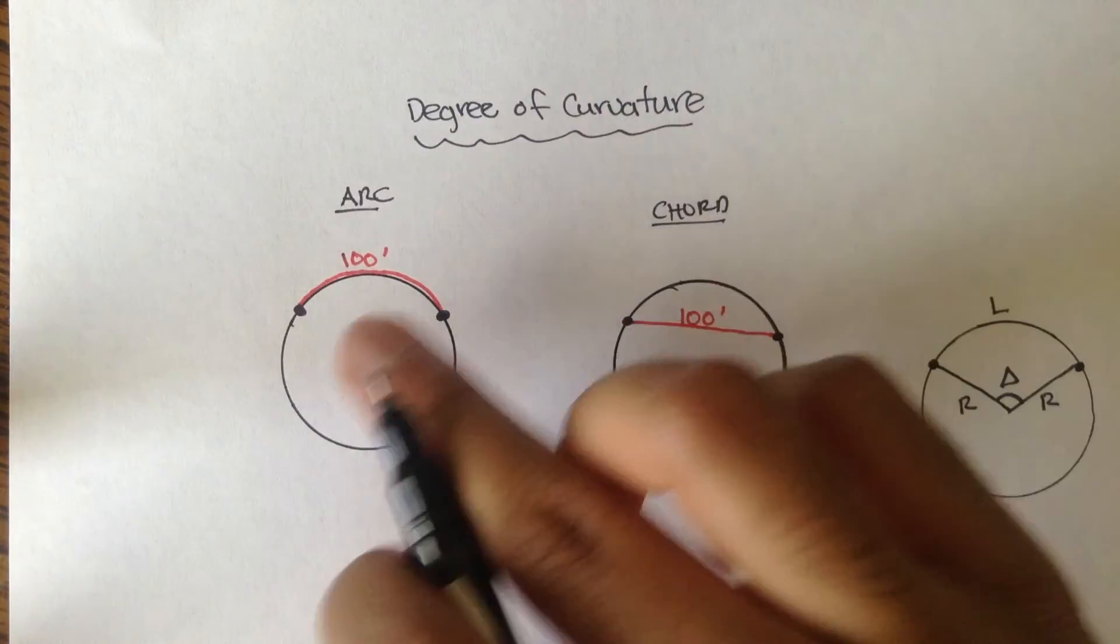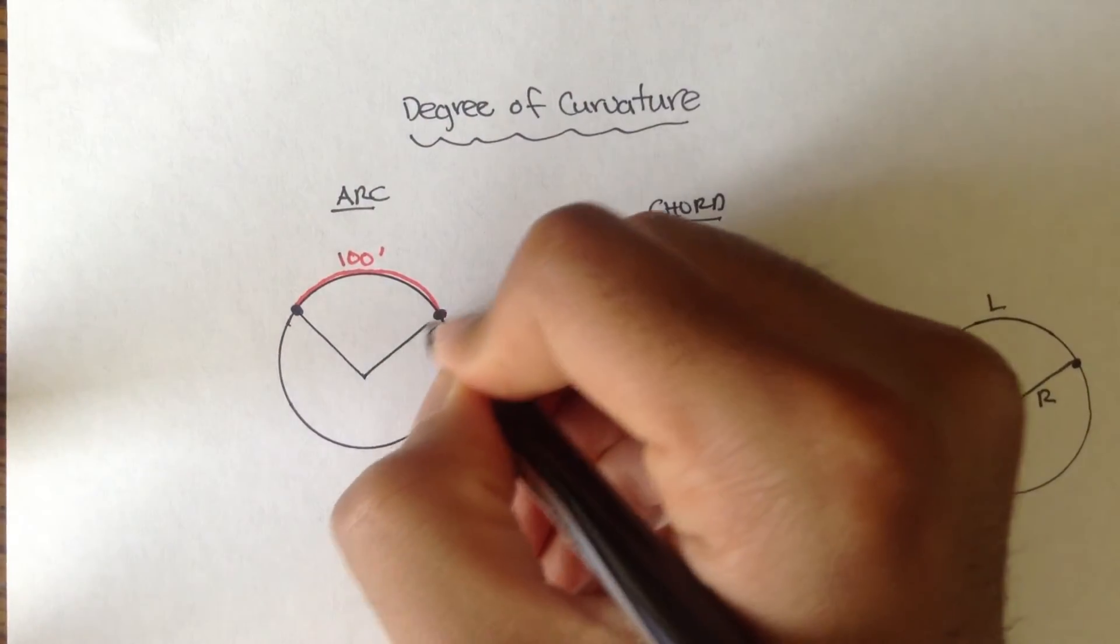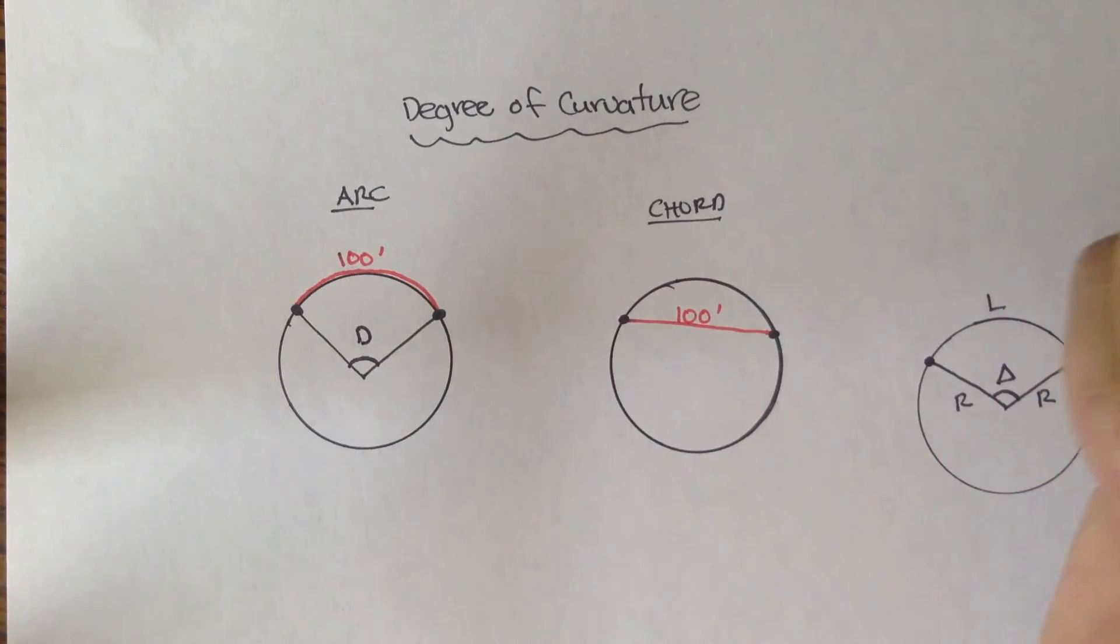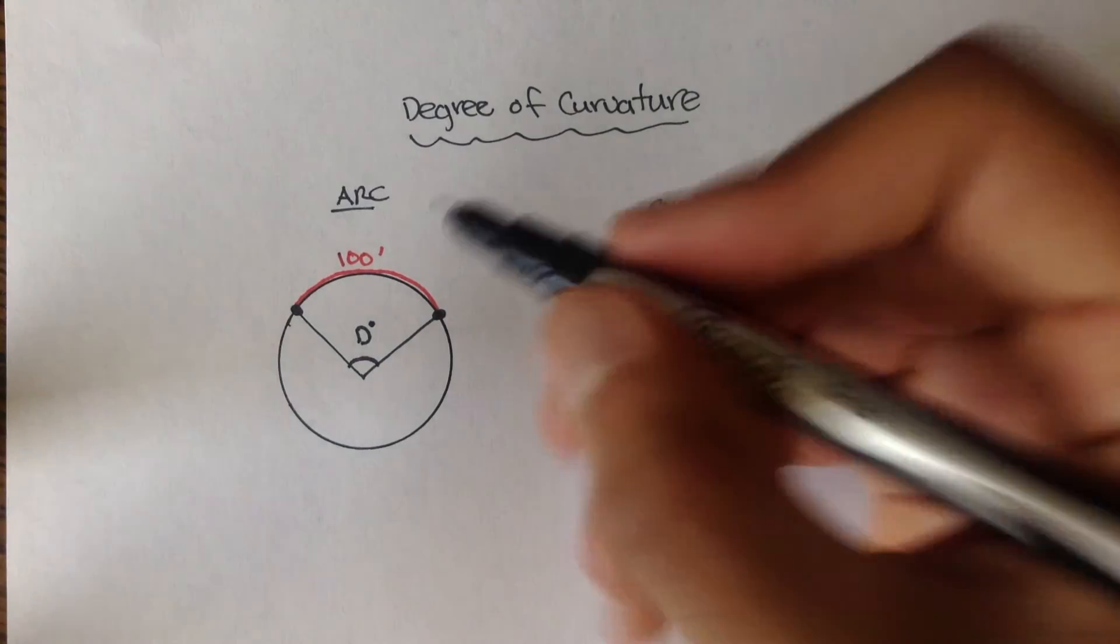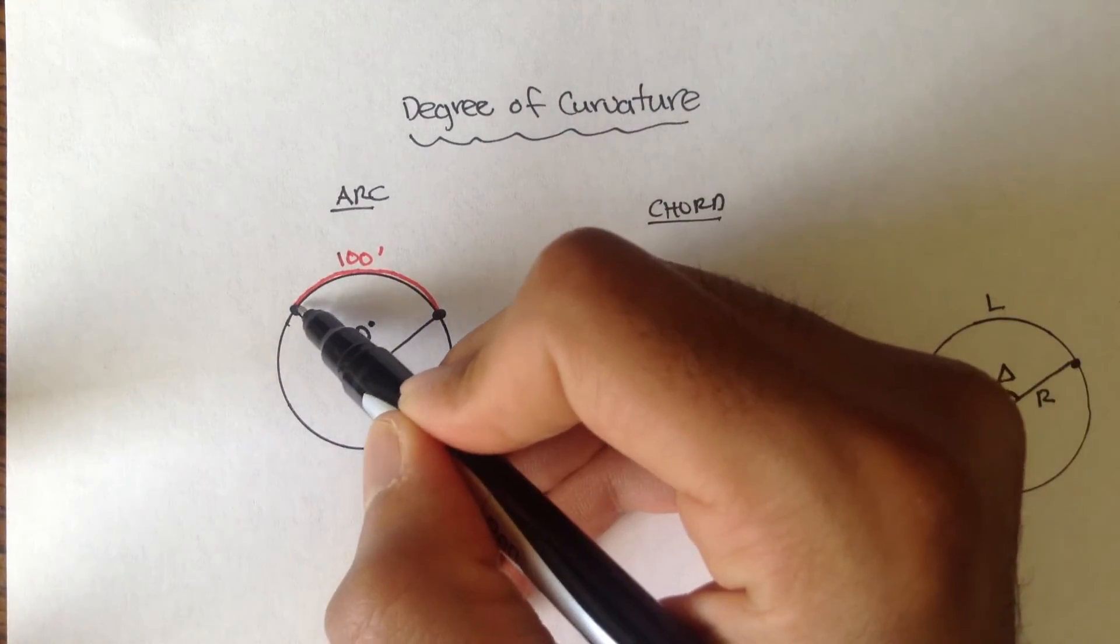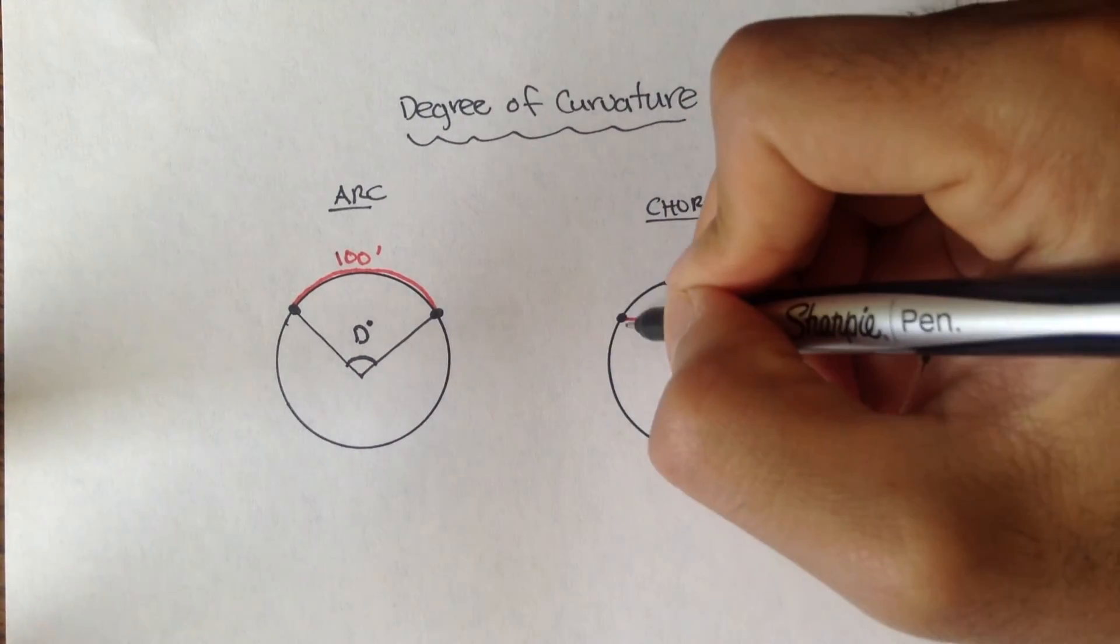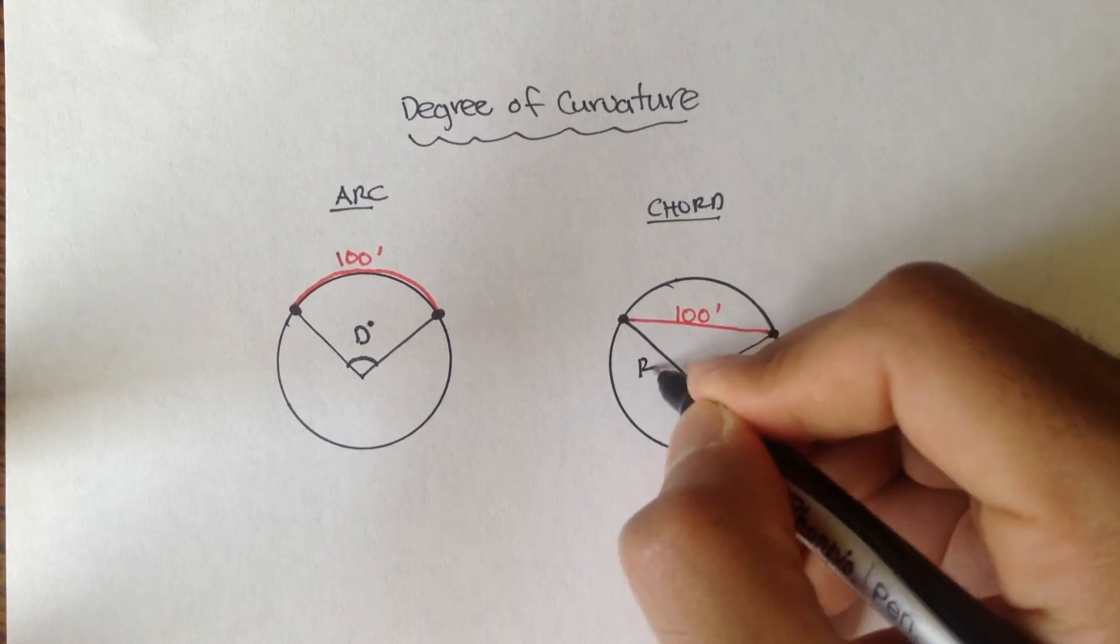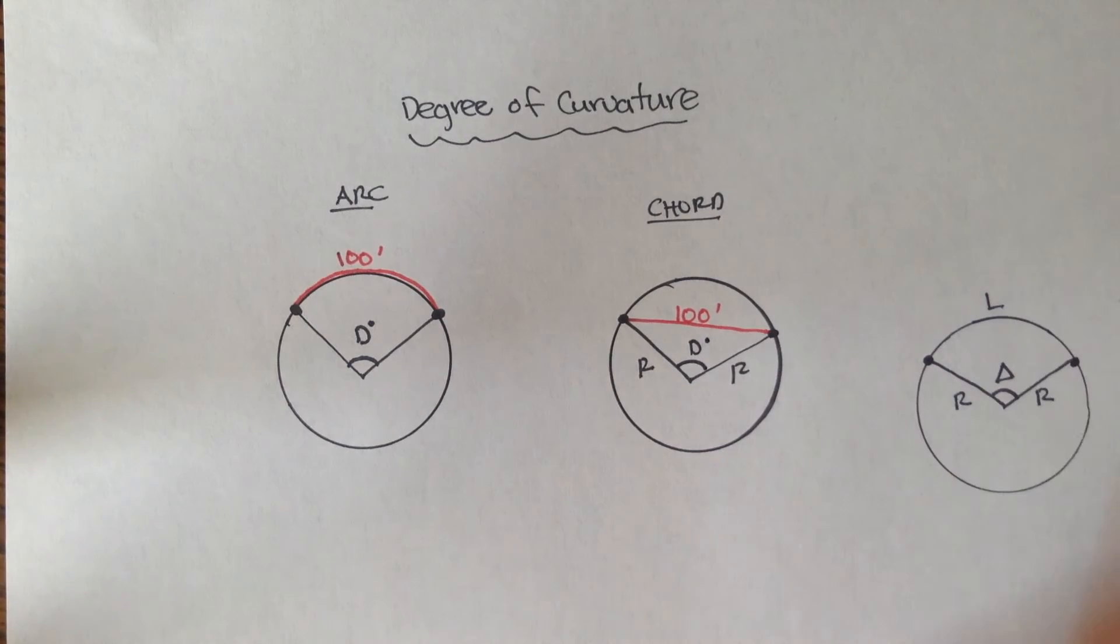So, let's actually work with arcs. The degree of curvature is this interior angle, I'm going to call it D, D as in dog, degree with a little degree sign on it. And degree of curvatures only apply to curves that are a length of 100 feet, or chords that are a length of 100 feet. So, this is R, this is R, degree of curvature.